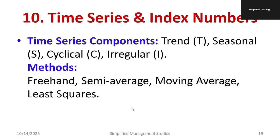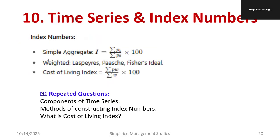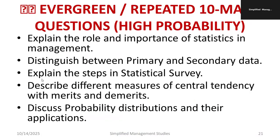Regarding time series and index numbers: from time series, expect questions on trend, seasonal, cyclical, and irregular components. Methods for time series analysis include freehand method, semi-average method, moving average method, and least squares method. For index numbers, remember the simple aggregate formula: Σp₁ / Σp₀ × 100, and also weighted aggregate and cost of living index formulas. Probable questions: components of time series, methods of constructing index numbers, and what is a cost of living index.